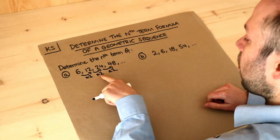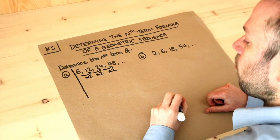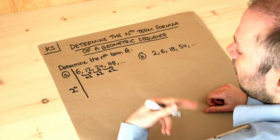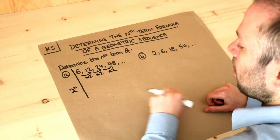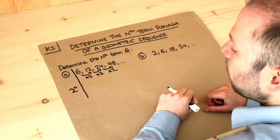If you're timesing by the same number each time, in this case 2, we start our formula with 2 to the power of n. If you were multiplying by 3 each time, you would start your formula with 3 to the power of n. If you're multiplying by 4 each time, you would start your formula with 4 to the power of n.